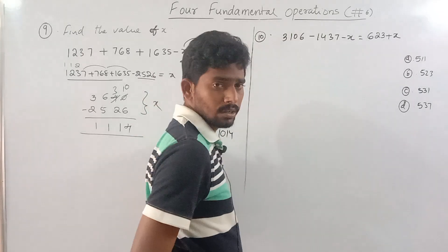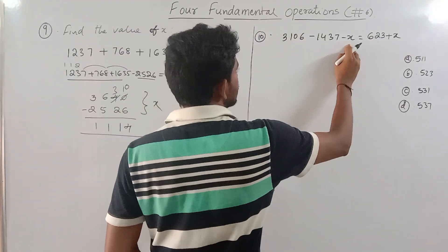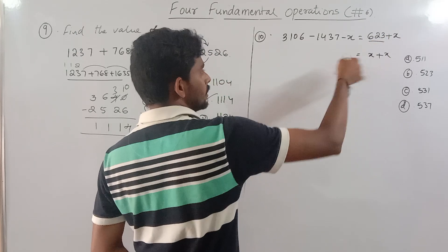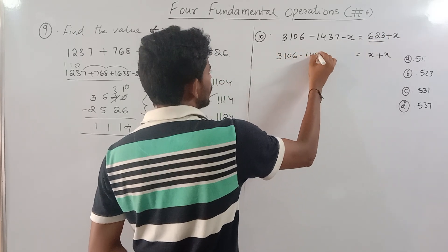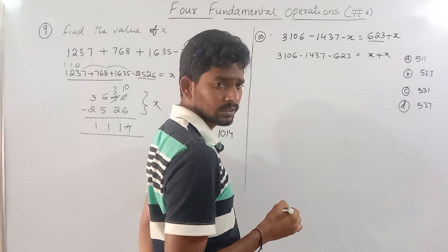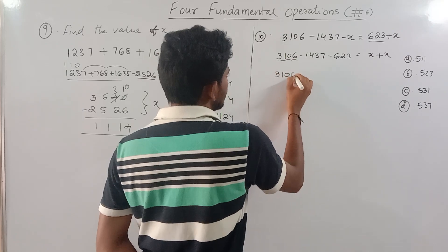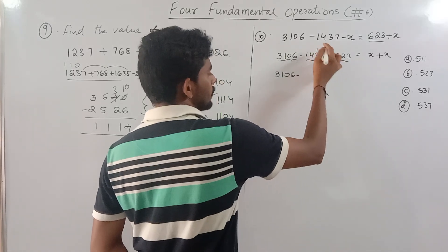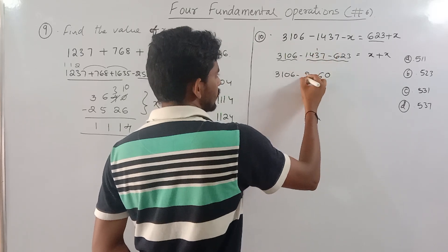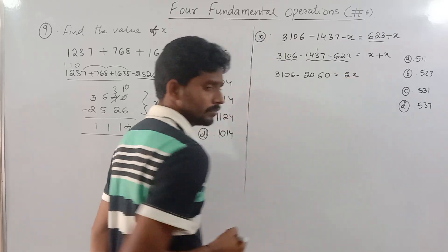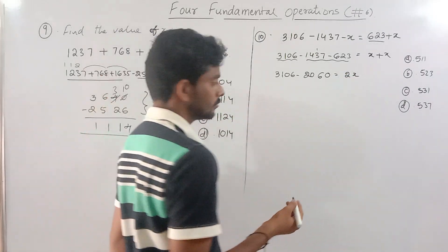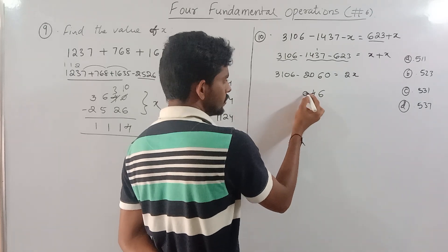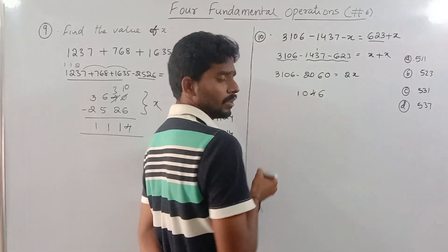Tenth one: 1437 minus x equals 2623. Adding negative numbers, the result is 1046.